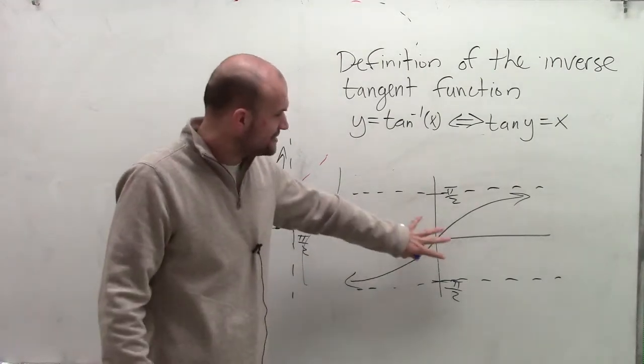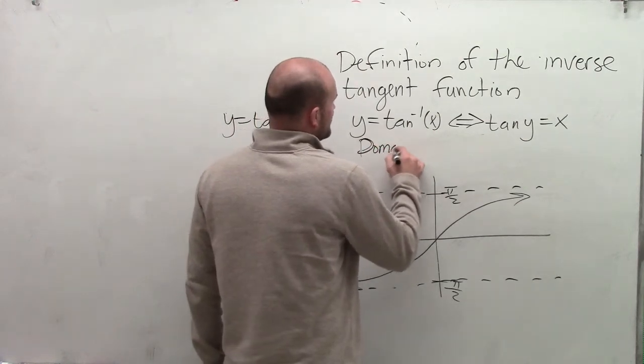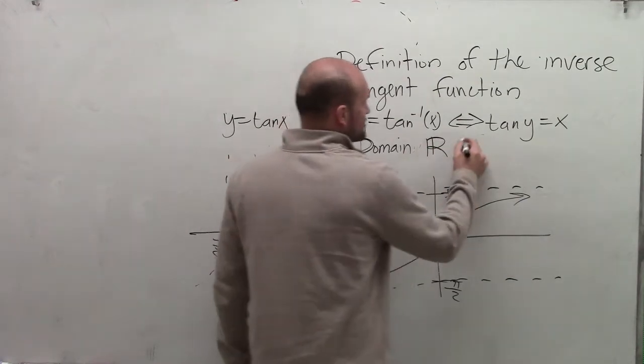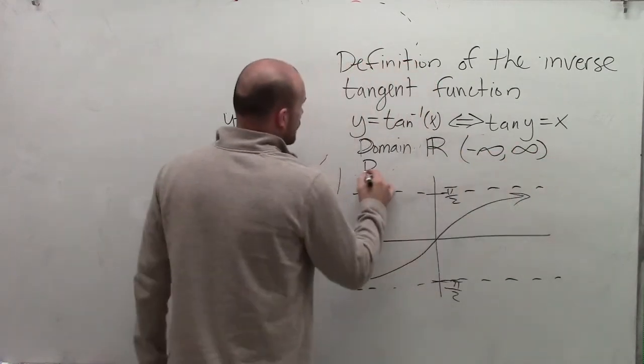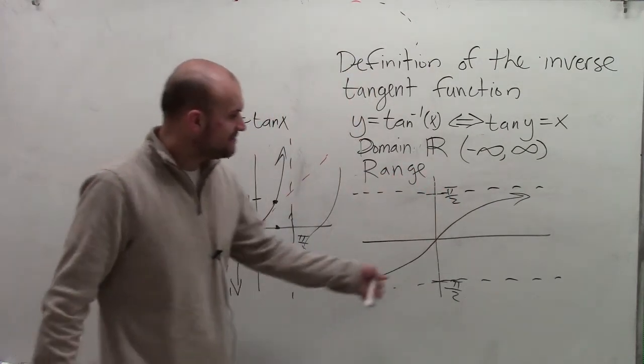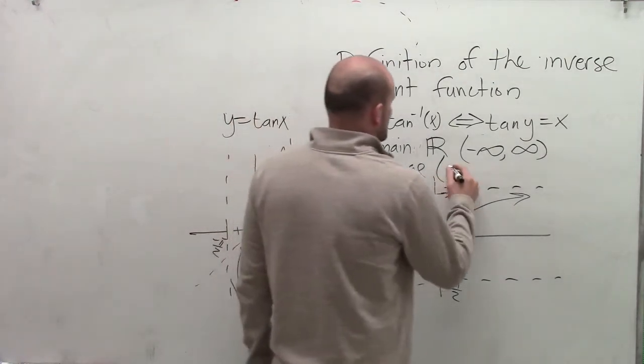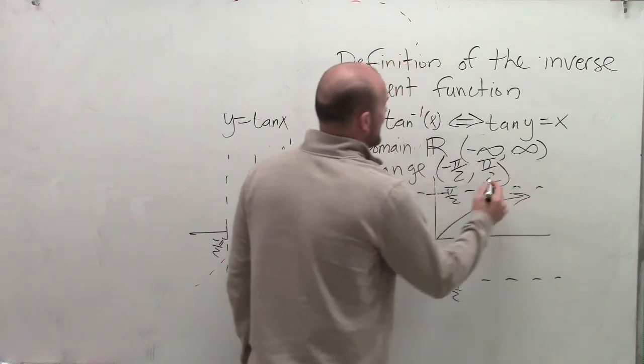And when looking at this, you can see now, our domain of our inverse tangent function is going to be all real numbers, or it's going to go from negative infinity to infinity. Whereas the range is only going to be contained between values of negative pi-halves and pi-halves. So we can say the range is negative pi-halves comma pi-halves.